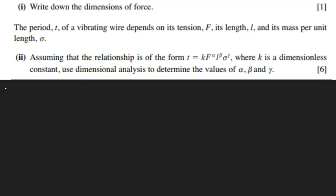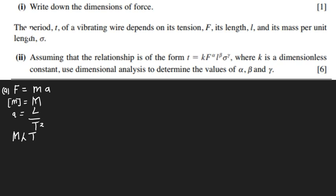For part A, the dimensions of force: we know that force equals ma. In MLT concept, mass is M, and acceleration is L over T squared. So in MLT concept, force is M times L over T squared, which gives us M L T to the power negative two.